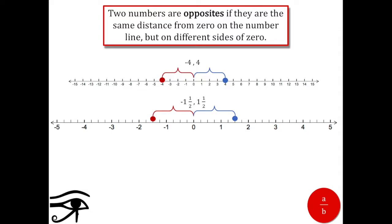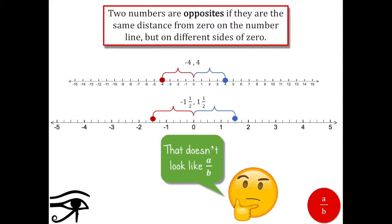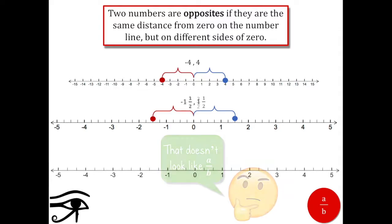Wait a second, that's not in the form of a over b. Oh, but it can be. Either way is fine. Here's another example: how would you plot this pair, negative three and two-thirds and three and two-thirds?